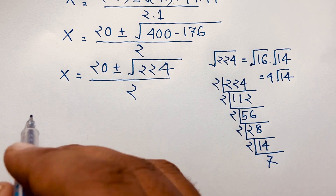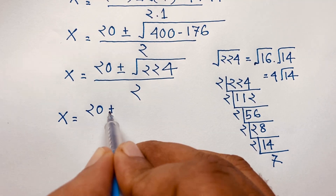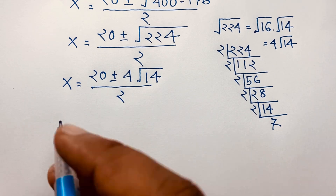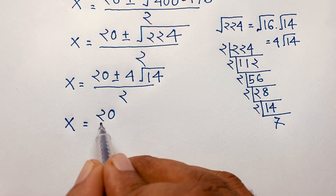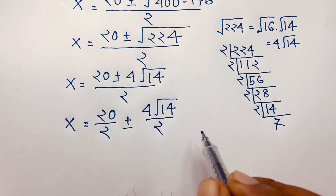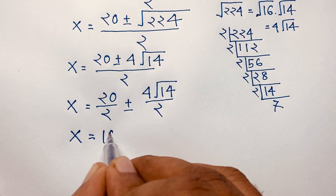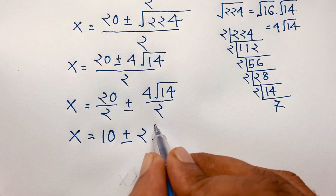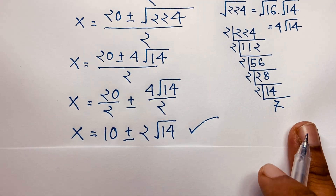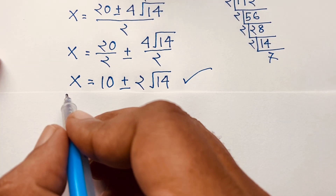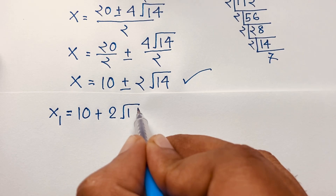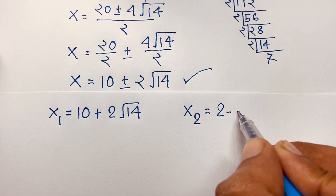Substituting back: x equals (20 plus or minus 4 square root of 14) divided by 2. Separating the fraction: x equals 20 over 2, plus or minus 4 square root 14 over 2, which simplifies to x equals 10 plus or minus 2 square root of 14. So x₁ equals 10 plus 2 square root of 14, and x₂ equals 10 minus 2 square root of 14.